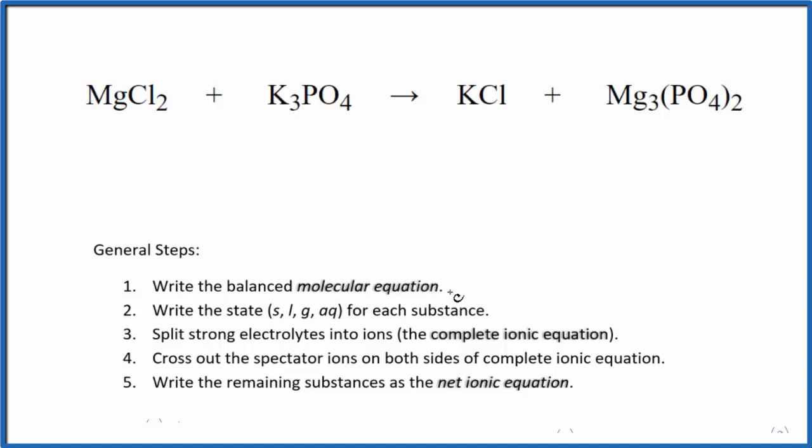First, for net ionic equations, we have to balance the molecular equation. This is our molecular equation. I can see that I have these three magnesiums here and only one here. I'll put a three. Now I have three times two, six chlorine atoms. Put a six here. Now I have six potassiums. Let's put a two here. That'll give me the six potassiums. I have two phosphates, two phosphates. This is the balanced molecular equation.